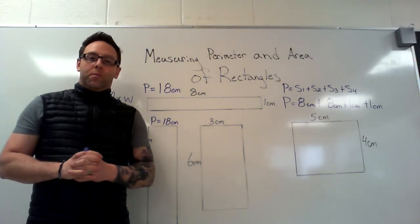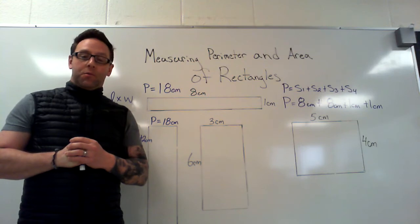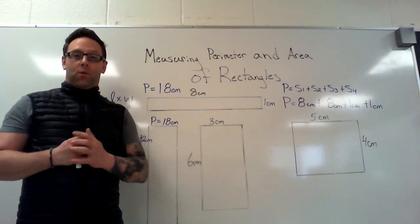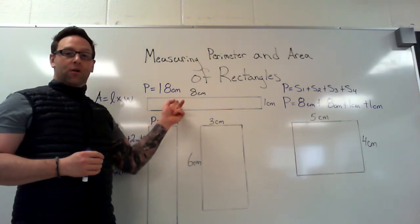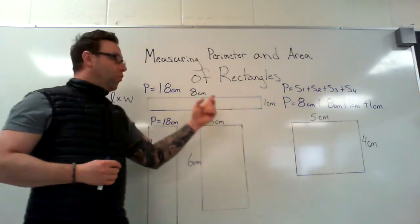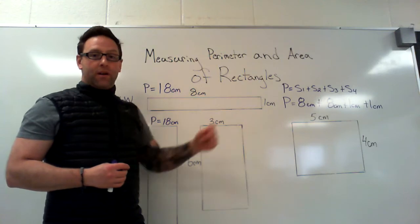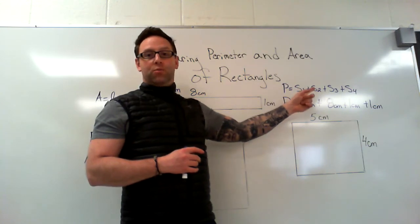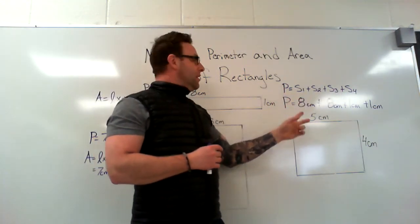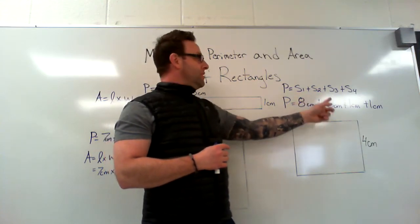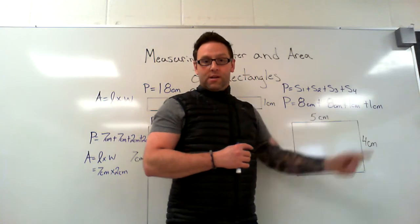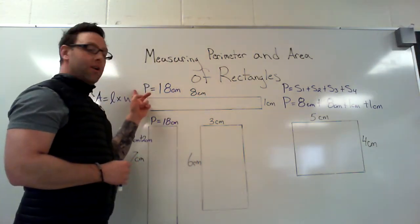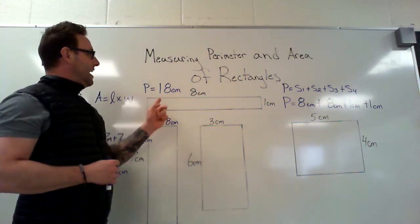Let's look at the perimeter formula in action. Perimeter equals the sum of all sides, so that means side one plus side two plus side three plus side four. For this rectangle, our length is eight and our width is one. So P equals s1 plus s2 plus s3 plus s4, which works out to P equals eight plus eight plus one plus one. Eight plus eight is 16, plus one is 17, plus one is 18.